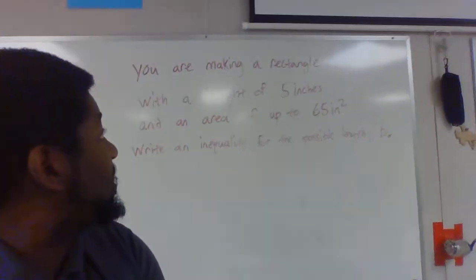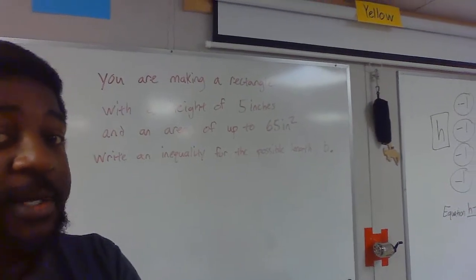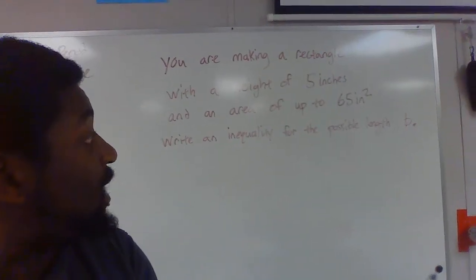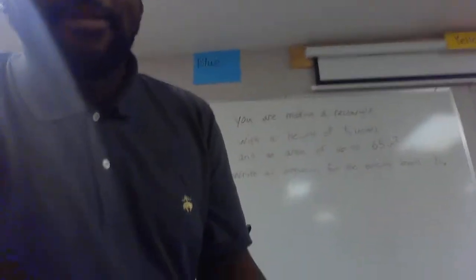You are making a rectangle with a height of 5 inches and an area of up to 65 square inches or inches squared. Write an inequality for the possible length b. I know we haven't really done very many word problems or turning word problems into inequalities.